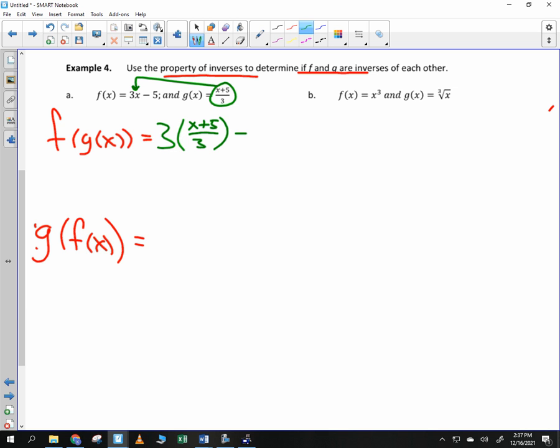Let's see what happens. If we compose these two functions together, what's going to happen to these threes? Yeah, you have 3/1 times this thing over 3, and those threes will cancel. So you'll get x + 5 - 5. What's x + 5 - 5? It's just x. And that's what we want. You always want to come up with just x.